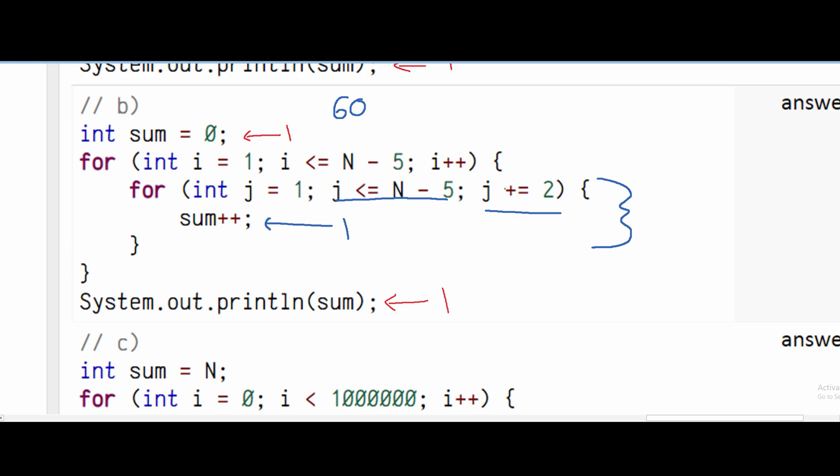And j right here is being added to 2 every single time, and this is true also for our outside for loop. However, our i value is not being incremented as often as our j value is. It's incrementing slower than our j value is incrementing.